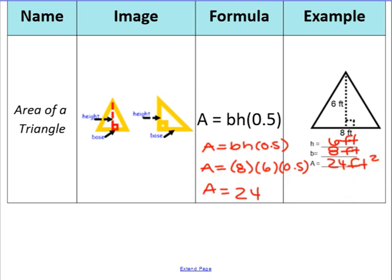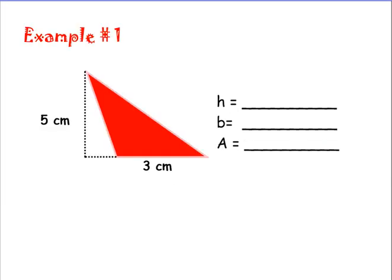Let's work through Example 1 in your actual notes. The triangle itself is in red. What you see on the dotted line is just showing you the height. This dotted line is not in any way part of the triangle — it is just showing you from top to bottom what the height would be, because this triangle is slanted and height is not slanted. The height of this triangle is 5 centimeters and the base is 3 centimeters.